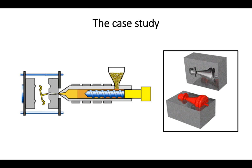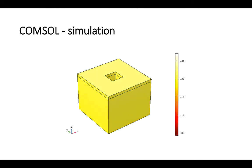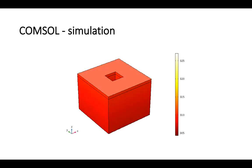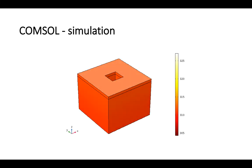Here we present a case study in which we apply process modeling. The part to be manufactured is a simple mold used for injection molding, where plastic granules are melted and injected into the mold, producing final parts in the shape of the cavity as depicted on the right side. The mold is idealized as a cube with a cavity in the middle. We simulated the temperature increase inside the SLM machine during manufacturing. The part starts at 300 Kelvin, about 20 degrees Celsius or 68 degrees Fahrenheit. As the laser passes over the part it gets heated repeatedly, and since it cannot remove all the heat, the temperature increases to about 330 Kelvin.